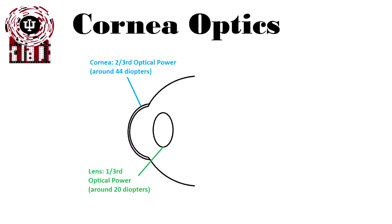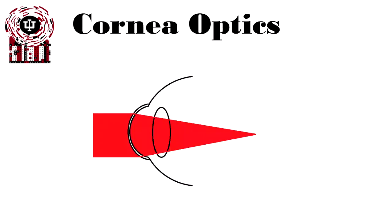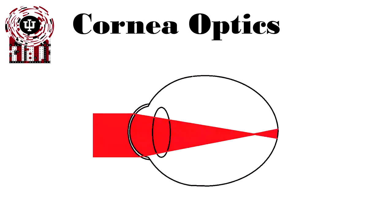The cornea provides two-thirds and the lens one-third of the power, and that allows light to be focused back to the eye. That focus could be perfectly onto the retina, or it could be in front of the retina or behind it. In this case, it's in front — like myopia.